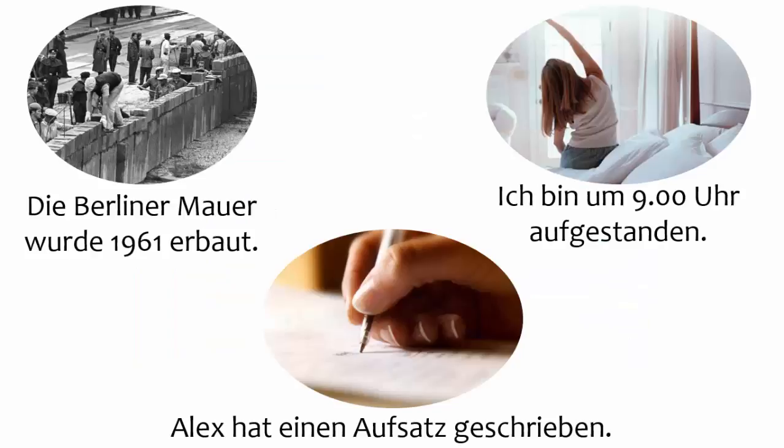Here are some examples to clarify the process. In the upper left, we want to say that the Berlin Wall was built. Ask yourself whether the wall performed the action — in other words, whether the wall did the construction itself, or whether the wall was built by someone else. Since the wall didn't do the action, the correct helping verb is würde.